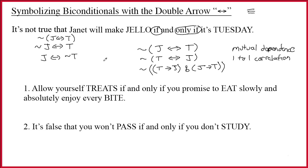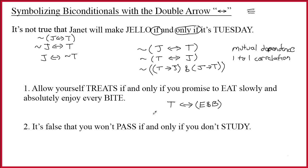That's the basic information. Let's look at sentence one: 'Allow yourself treats if and only if you promise to eat slowly and absolutely enjoy every bite.' We have an 'if and only if,' so the double arrow is the main connective. Treats is on one side; eat slowly and enjoy every bite is on the other. Parentheses are absolutely needed so the if and only if is the main connective. You could put e and b on the front side and t on the back — that's fine. You could also do it with an ampersand and two single arrows.